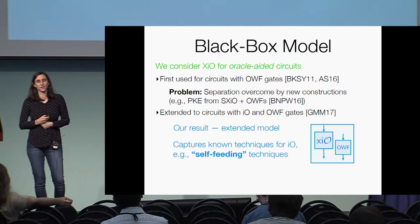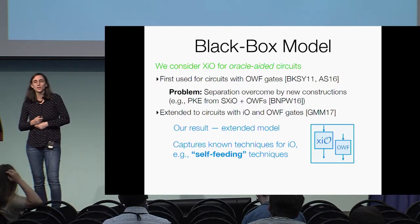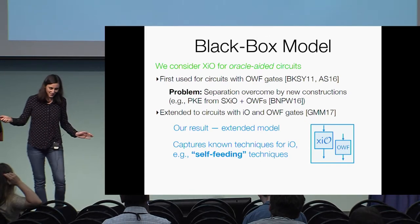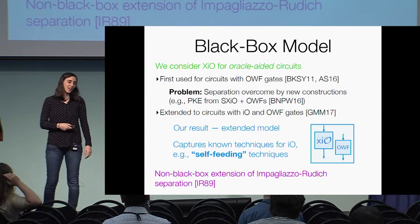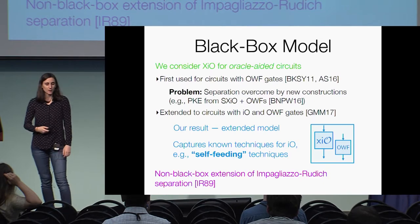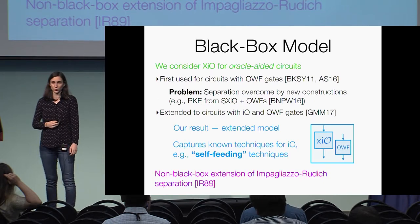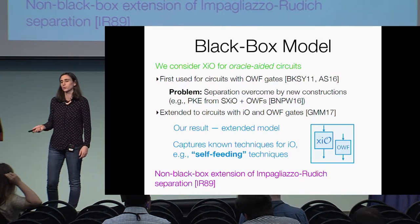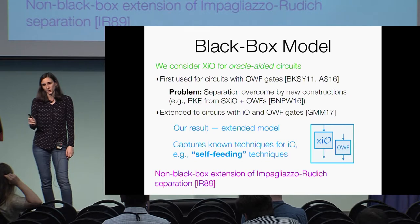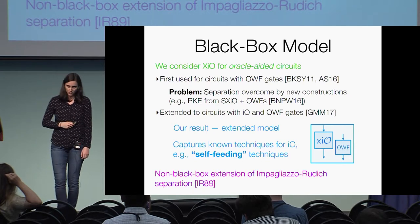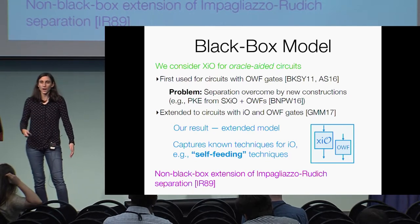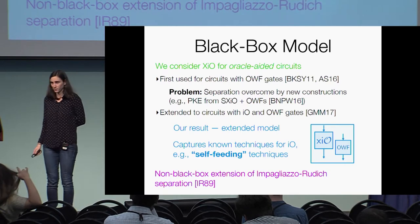Even if you don't care about IO or XIO, this is a non-black-box extension of the classical Impagliazzo-Rudich separation, ruling out black-box constructions of public key encryption from one-way functions. So this does shed light on this very long-standing open problem.